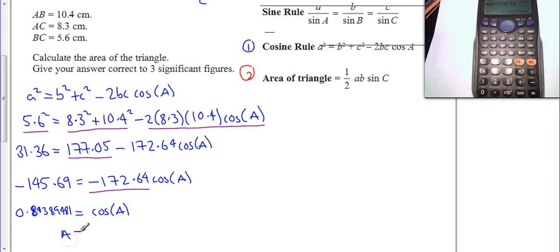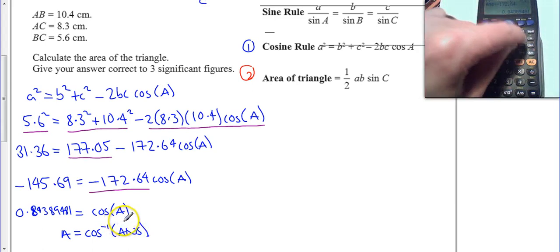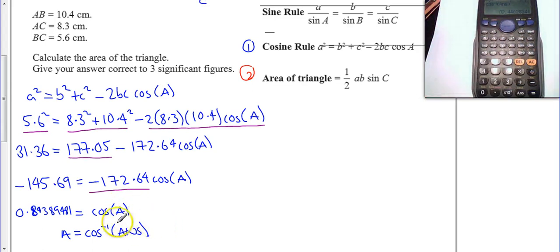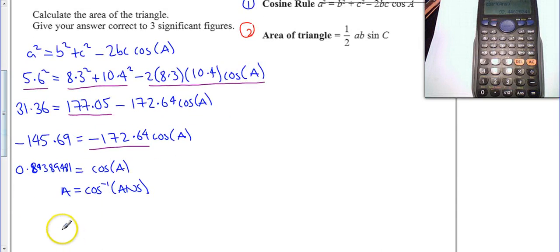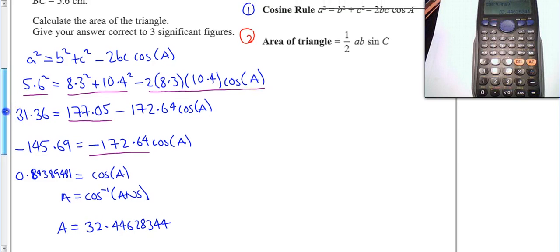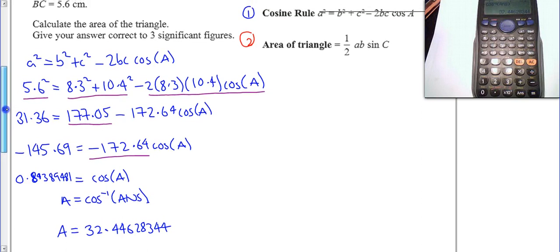So to work out what A is, I have to do cos inverse, and I can use my answer button on the calculator. So I just have to do shift cosine answer, and I find out that A is 32.44628344. But again, I'm not going to round that. I'm going to leave that in my calculator as my answer button. So step one done. That was quite hard work. That would be three of the five marks.